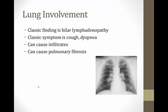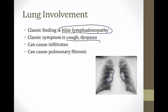Two classic things about lung involvement in sarcoid: first, hilar lymphadenopathy is a classic finding. In this chest X-ray, the hilar lymph nodes are enlarged and appear bright white — that's hilar lymphadenopathy, which you can also see with tuberculosis but is classic for sarcoid. The classic symptoms are cough and dyspnea. Sarcoid can also cause infiltrates that look like pneumonia and can lead to pulmonary fibrosis, but the key things to know are hilar lymphadenopathy and cough and dyspnea.